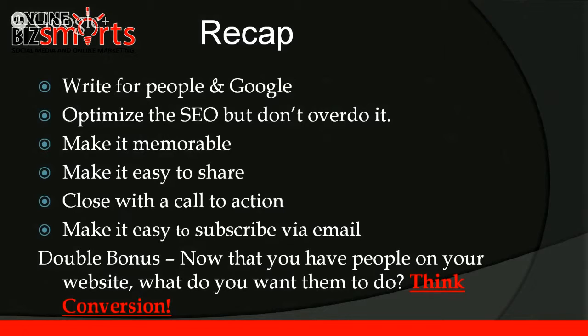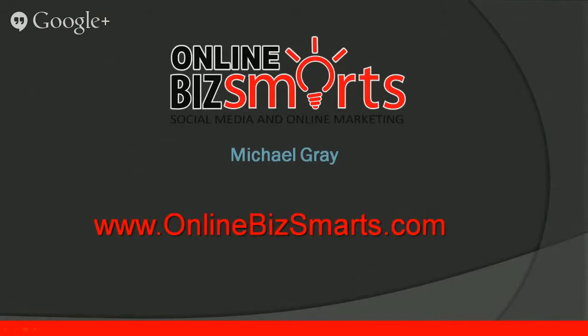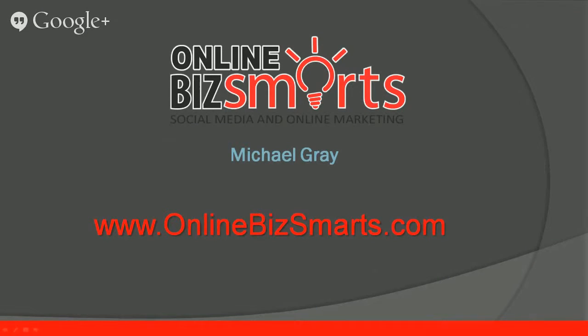Recap: write for people and for Google. Optimize the SEO but don't overdo it. Make it memorable and easy to share — if it's memorable, people want to share it. Close with a call to action and make it easy to subscribe via email. And the double bonus: now that you have people on your website, what do you want them to do? Think conversion — use a sidebar or other elements to get them to take the next step, whether that's opting into your email list or subscribing to your blog posts.